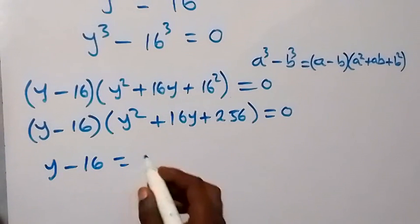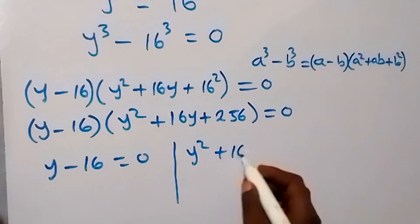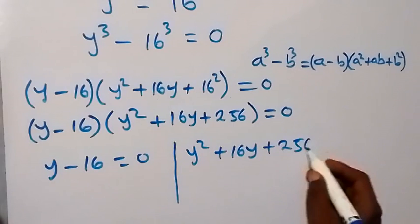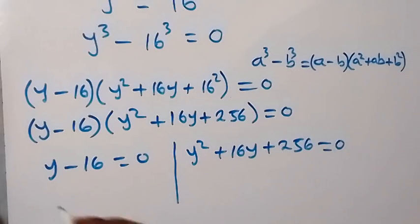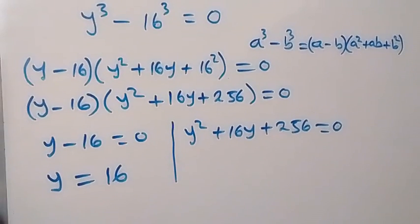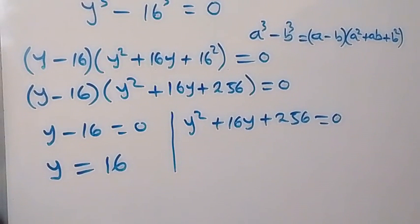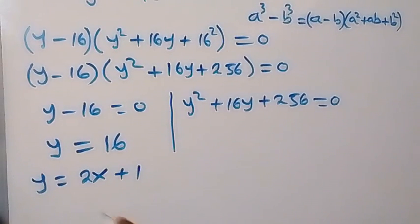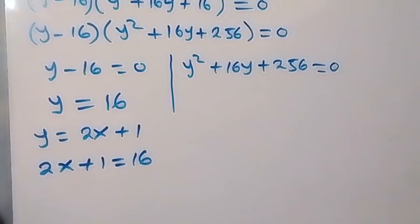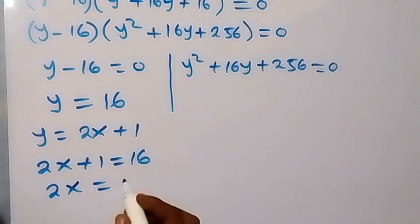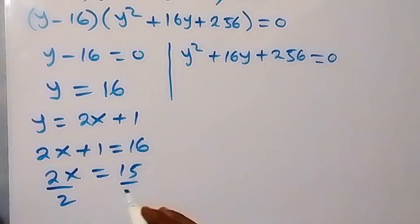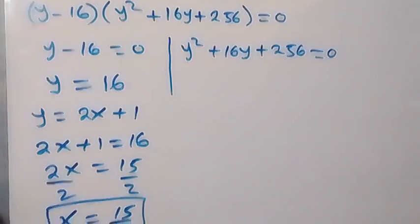So we have two possible cases: y minus 16 equals to zero, or y squared plus 16y plus 256 equals to zero. On this first case, we have y equals to 16. We can recall that we represented y as 2x plus 1 from the beginning, and therefore we can say 2x plus 1 equals to 16. Taking 1 to this side gives 16 minus 1 which is 15, so 2x equals to 15, and dividing both sides by 2 gives x equals to 15 over 2, which is a valid solution.